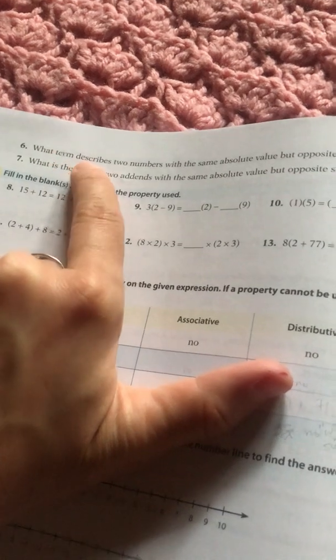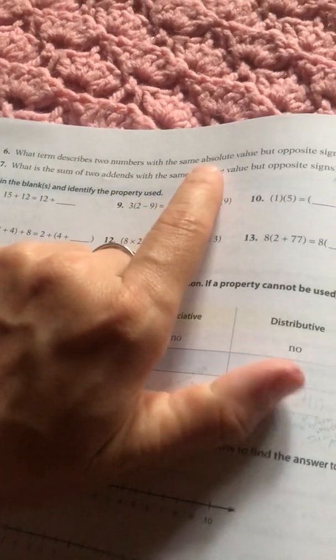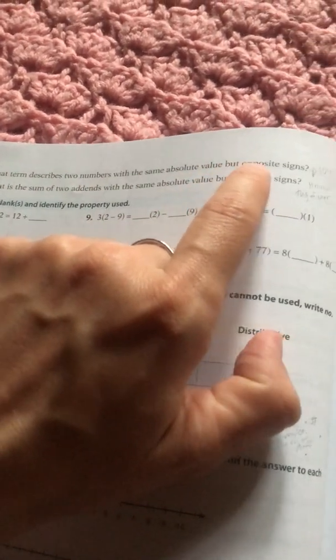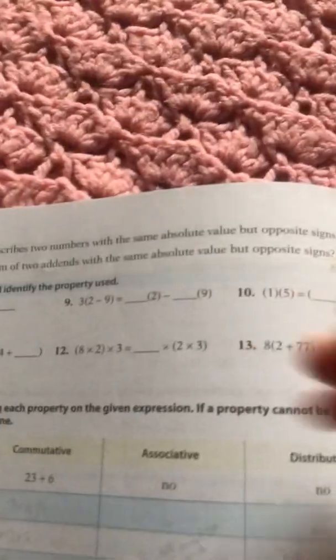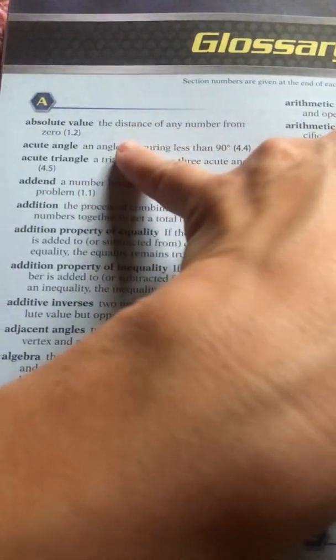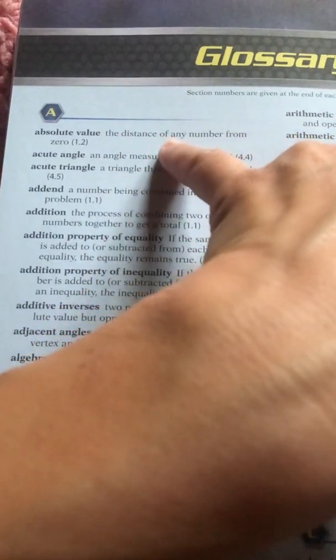Number six. What term describes two numbers with the same absolute value, but opposite signs? So absolute value. You may want to look back in your glossary if you can't remember what that is. Absolute value would be like if you had a negative 3, the absolute just number value of it is 3. And then we'll think about what sign it has later. The distance of any number from zero.